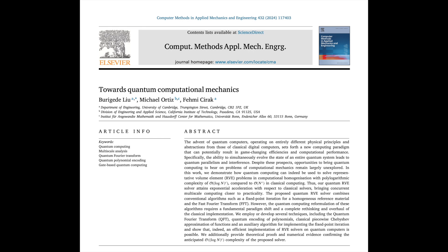How do we actually know this quantum approach works in practice? The researchers actually built and tested their quantum algorithm. They used a platform called Qiskit, which is kind of like a programming language for quantum computers. They started with something called Poisson problems, which are actually super common in physics and engineering. For example, if you're designing a new kind of heat sink for a computer chip, you need to figure out how the heat flows through different materials — that's a Poisson problem. They used these to test whether their quantum homogenization algorithm could actually deliver.